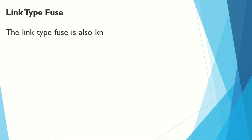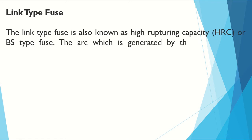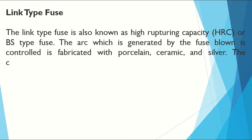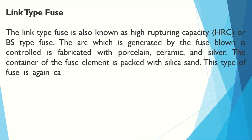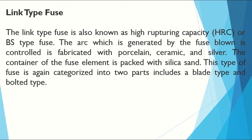Link type fuse, also known as High Rupturing Capacity (HRC) or BS type fuse. The arc generated when the fuse blows is controlled; it is fabricated with porcelain, ceramic, and silver. The container of the fuse element is packed with silica sand. This type of fuse is categorized into two parts: blade type and bolted type.